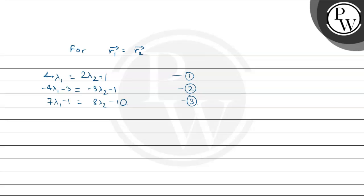From equation 1: λ1 = 2λ2 + 1 − 4, giving 2λ2 − λ1 = 3. I'll call this equation 4.